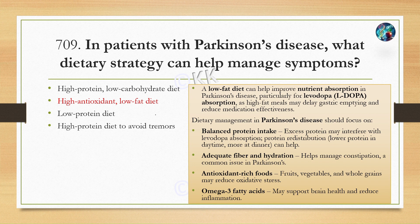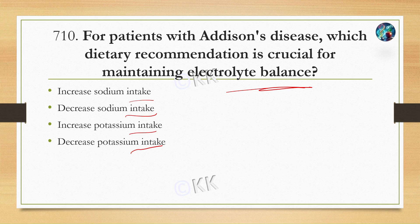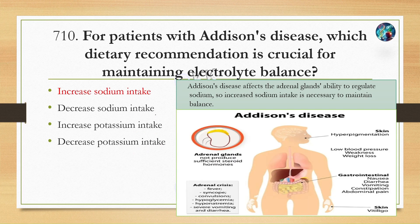For a patient with Addison's disease, which dietary recommendation is crucial for maintaining electrolyte balance? Option A: increase sodium intake. Option B: decrease sodium intake. Option C: increase potassium intake. Option D: decrease potassium intake. Addison's disease affects the adrenal glands and their ability to regulate sodium. Increased sodium intake is necessary to maintain sodium balance. Sodium plays an important role in blood pressure regulation, the sodium-potassium pump for intracellular and extracellular regulation, and water retention.